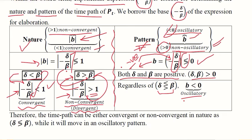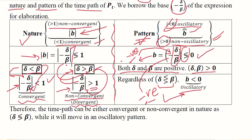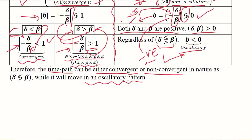The negative sign makes b negative regardless of whether delta is greater than beta or they are equal, resulting in an oscillatory pattern of the time path in the cobweb model. Summarizing: the time path will be either convergent or non-convergent, but its pattern will always be oscillatory. Now we need to understand this using diagrams.